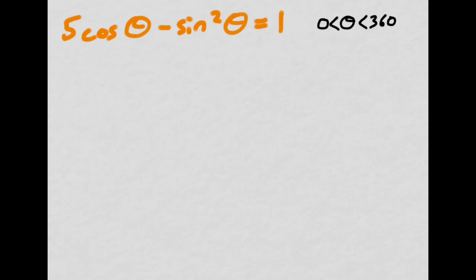So here's an equation, an equation that features both cosine and sine. I can't solve an equation which has two different trigonometric ratios without using an identity. It's the fact that it's got a sine squared that tells me the identity I'm going to be using has squareds in it.